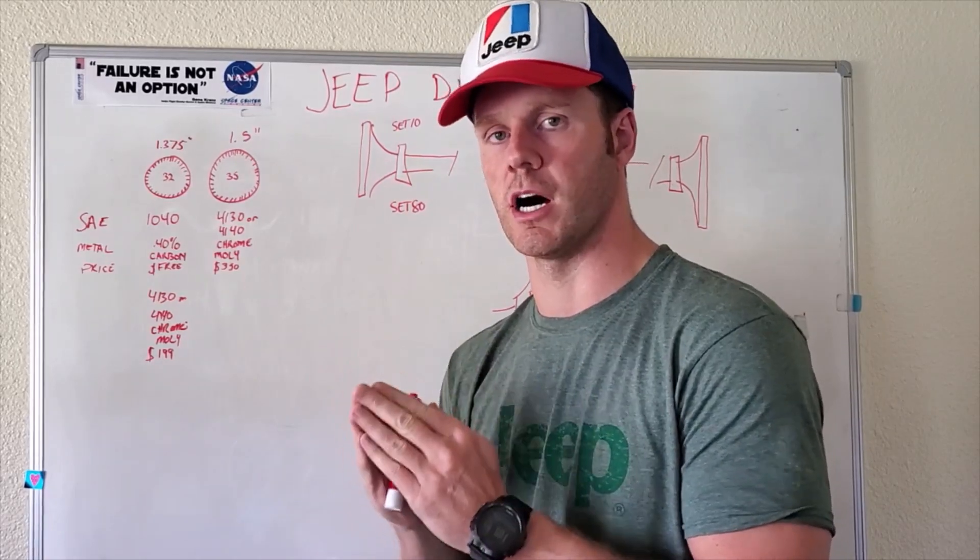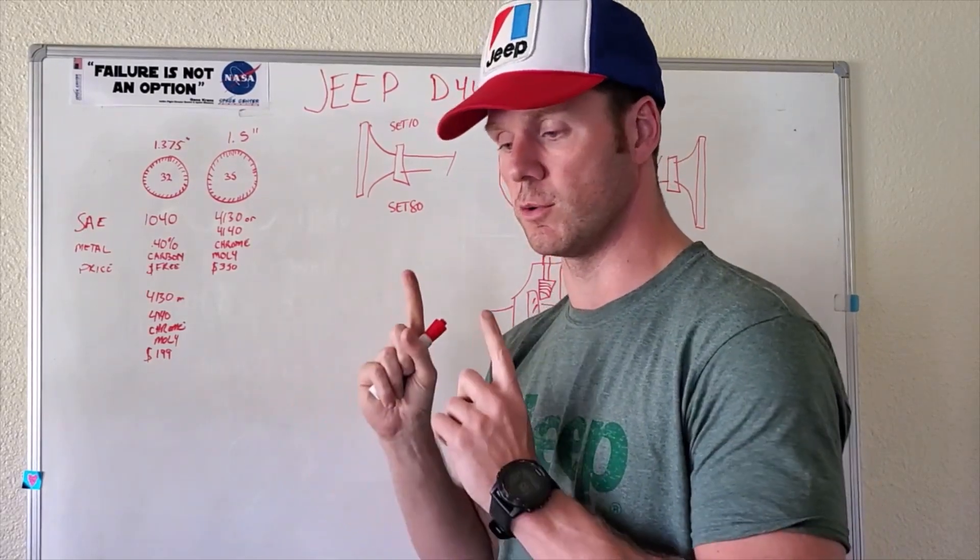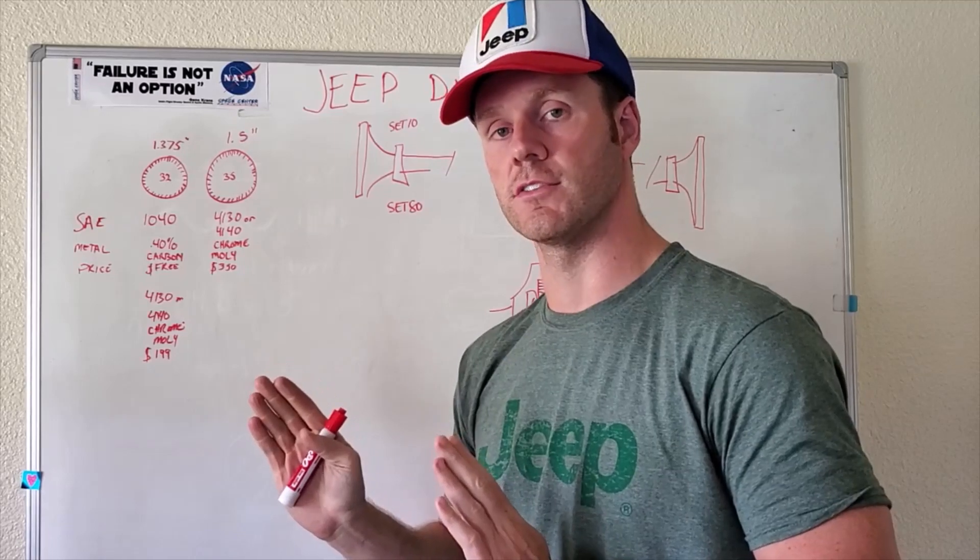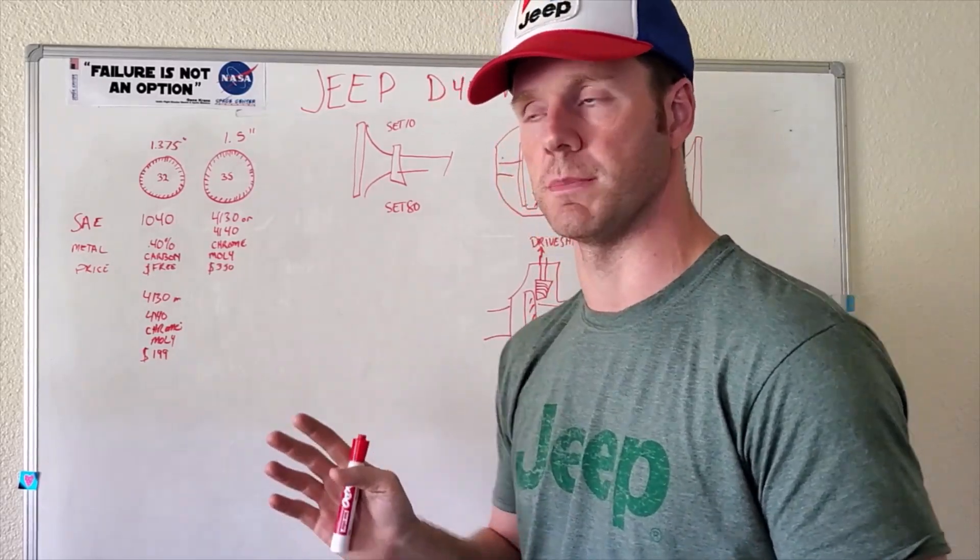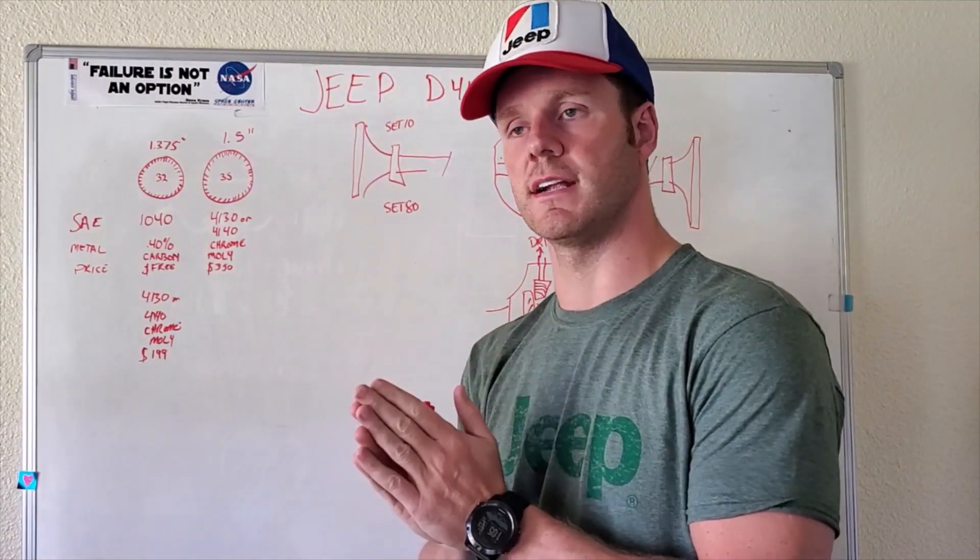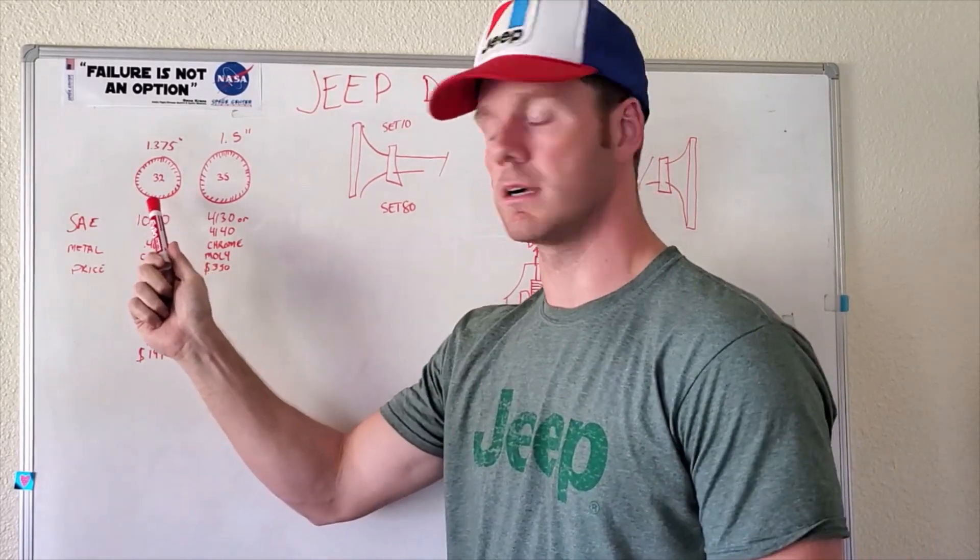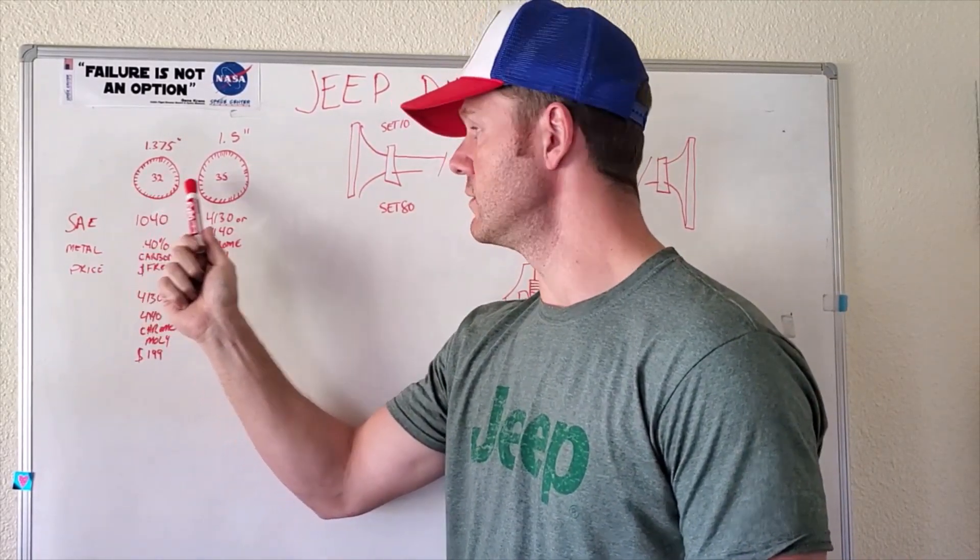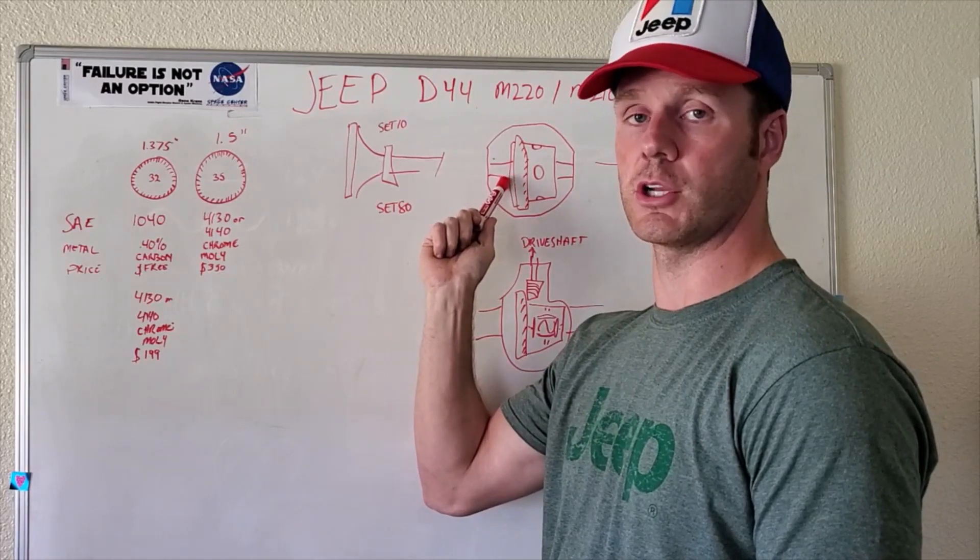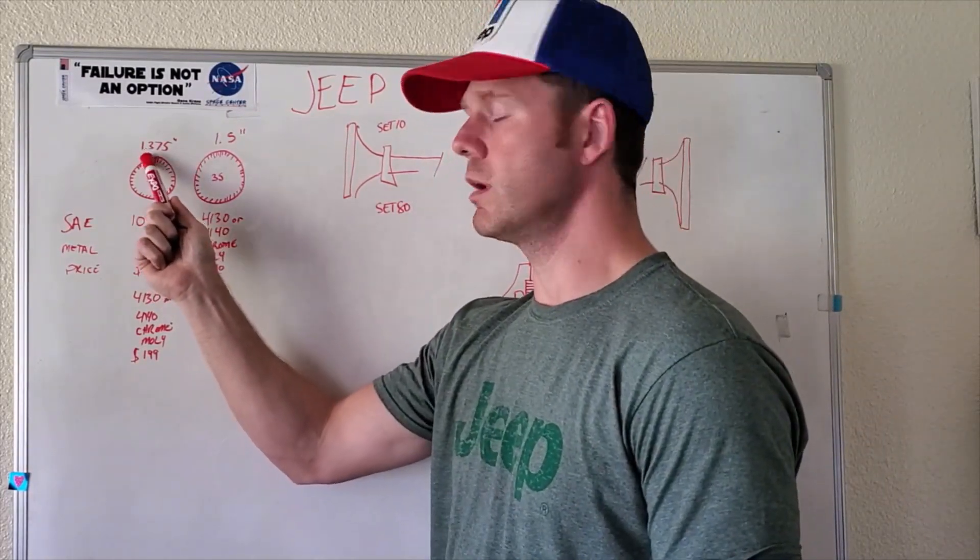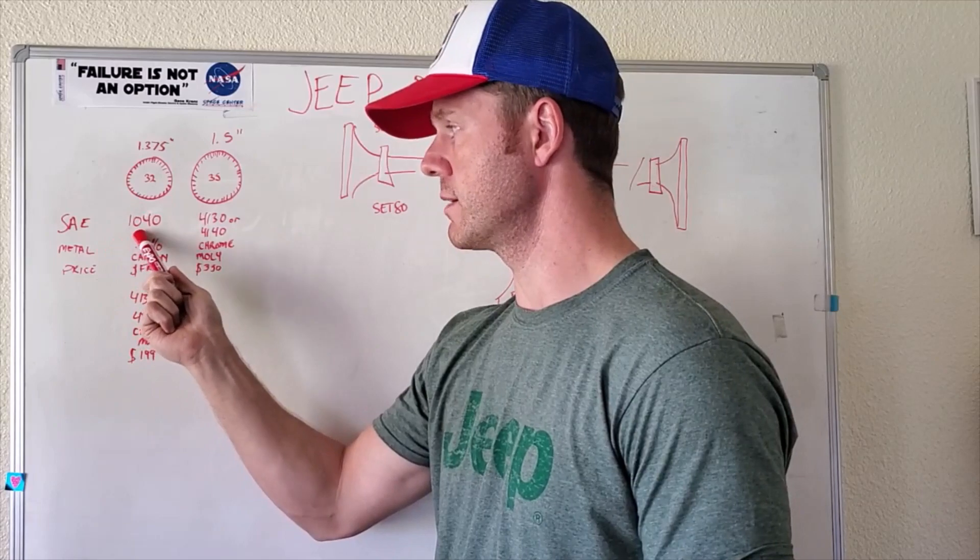All Gladiators have Dana 44s, front and rear. That's one of the reasons I bought a Gladiator over a Wrangler this time. This is like my fourth Jeep. The other thing was the Dana 44 that's in there is still 32 splines, which means we have a 32 spline shaft inside this differential that runs down into the locker or limited slip or just what we call an open diff. And that 32 spline is 1.375 inches. That's bigger than any Jeep previous to this.